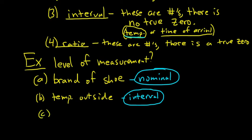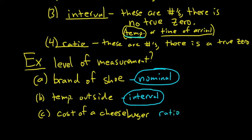Example C: cost of a cheeseburger. Any type of cost is always ratio because zero is the starting point for cost. So the answer here would be ratio.